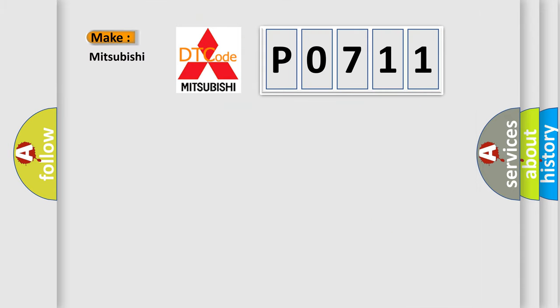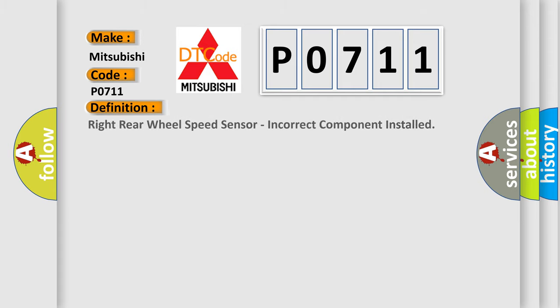So, what does the diagnostic trouble code P0711 interpret specifically for Mitsubishi car manufacturers? The basic definition is: right rear wheel speed sensor, incorrect component installed.